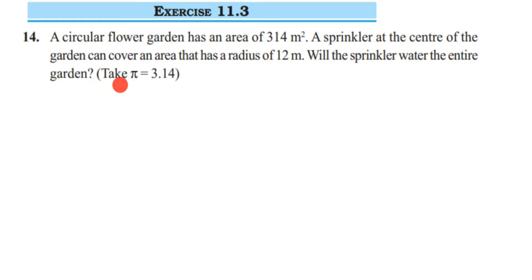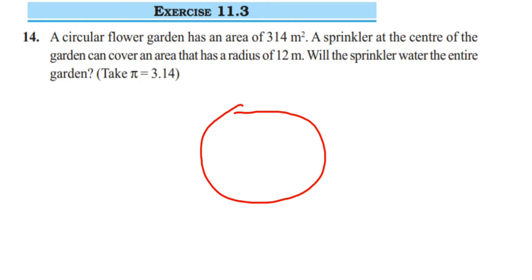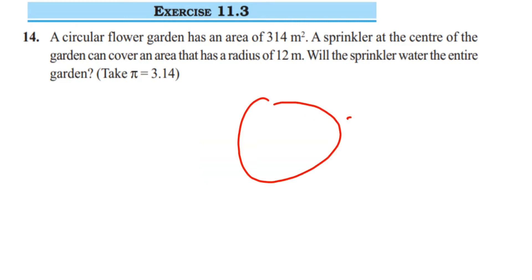Take pi value as 3.14. What they have given here is a garden which is in the shape of a circle, and the area of the circle is 314 square meters. There is a sprinkler at the center of the garden sprinkling water. The radius of the area it covers is given as 12 meters. Since the sprinkler also rotates in a circular shape, the area covered by the sprinkler will also be circular.